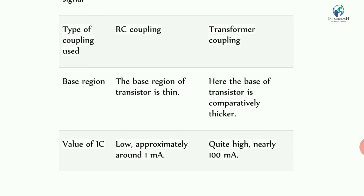The power amplifier depends on the voltage amplifier. The base of the transistor in the power amplifier is comparatively thick. Regarding the value of collector current (IC): in a voltage amplifier, the collector current is low — approximately around 1 mA — while in the power amplifier, it is quite high, nearly 100 mA.